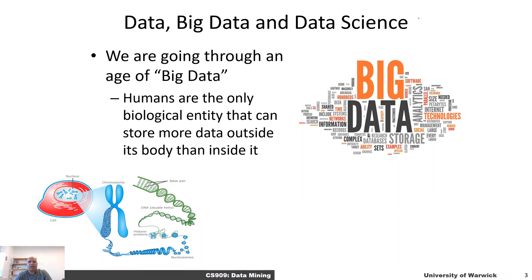Regardless of that, we are also able to store information in our minds — we can form memories and thoughts, which is another way we store data. However, storing data in the form of DNA is something other biological species, even trees, are able to do. Whereas thoughts and memories are at a higher level of cognition. What is peculiar about humans is that we are able to store data outside of our bodies as well.